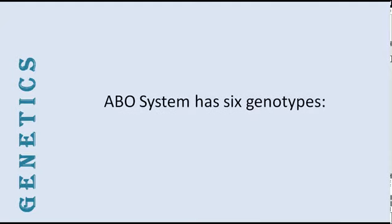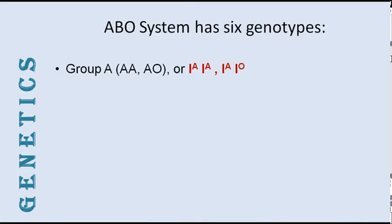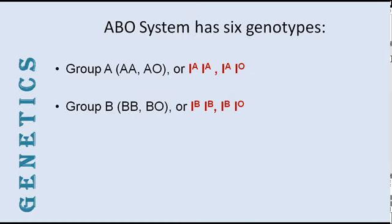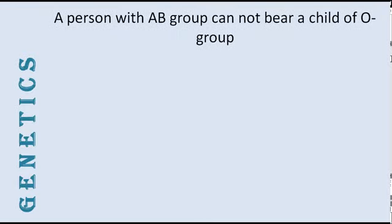The four groups are A, B, AB, and O. Group A has two genotypes — IAIA and IAIO — that is, homozygous or heterozygous. For simplicity, we write AA and AO. Similarly, B group also has a homozygous and heterozygous condition: BB and BO. AB is always heterozygous and O group is always homozygous. Thus, for the four phenotypes, there are six genotypes.